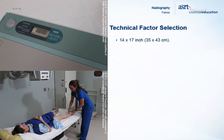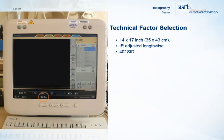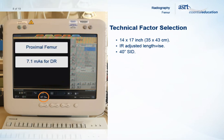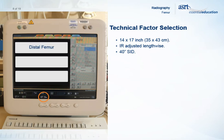A 14 by 17 inch or 35 by 43 centimeter image receptor is used for an AP projection of the femur and is adjusted lengthwise. The SID is set at a minimum of 40 inches, although some departments may require a longer SID. Collimation is adjusted to 1 inch or 2.5 centimeters on both sides of the leg and remains at 17 inches or 43 centimeters in length. 87.5 kVp is a common setting for AP projections, and generally a grid is used. Automatic exposure control may be used to achieve the proper mAs setting. However, common mAs settings for a proximal femur projection are 7.1 mAs when using digital radiography and 14 mAs when using computed radiography. Common settings for a distal femur projection are 3.6 mAs for digital radiography and 7.1 mAs for computed radiography. A small focal spot is selected with all settings.